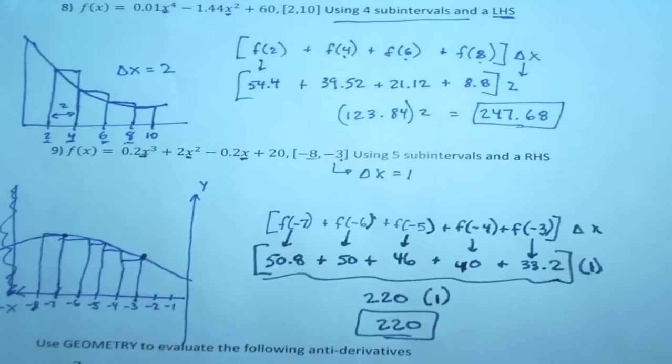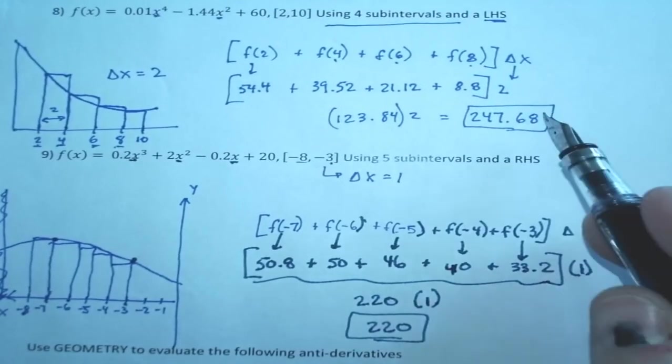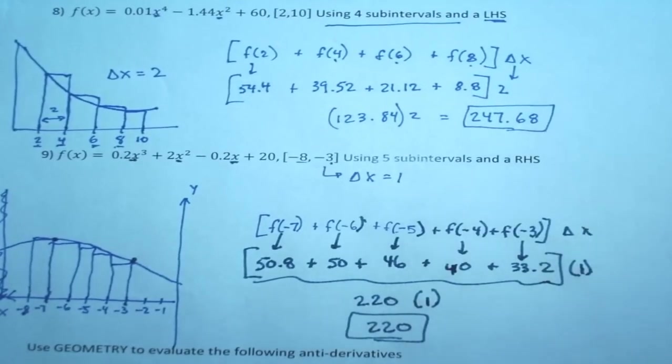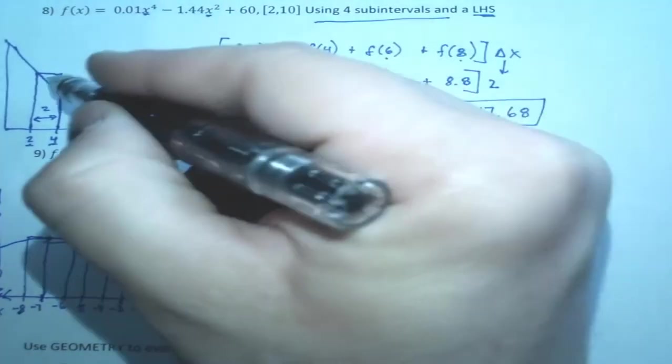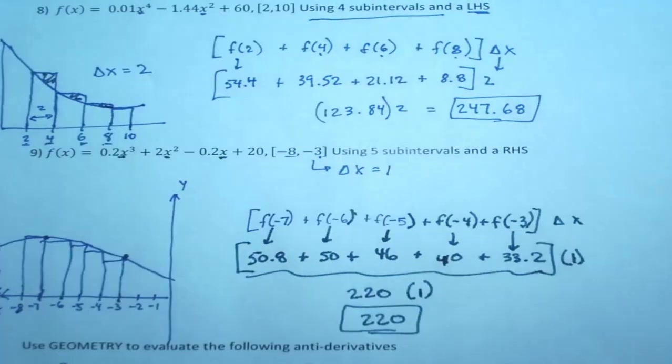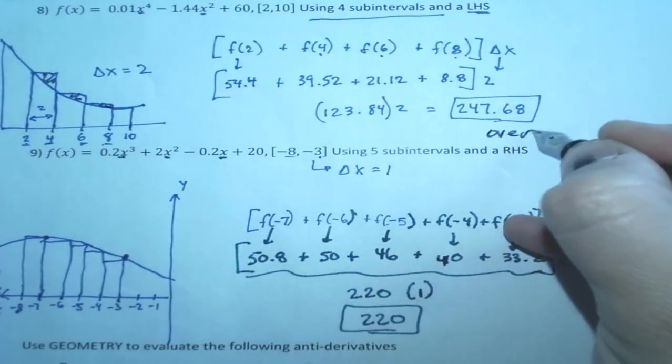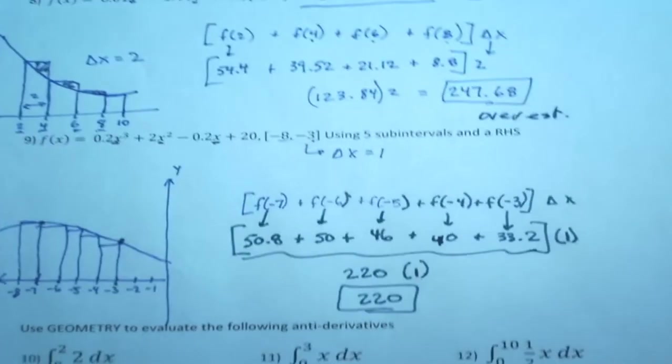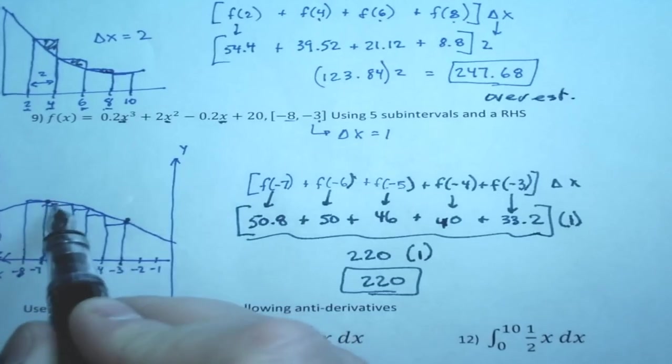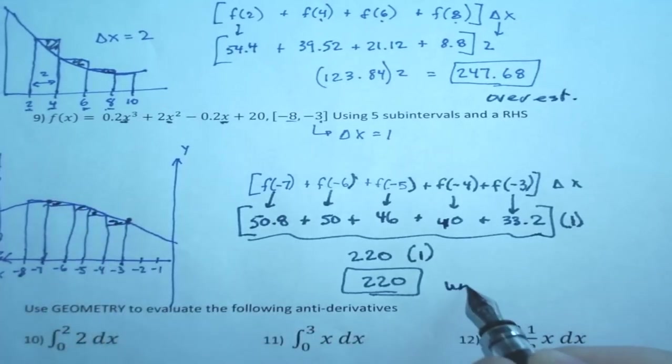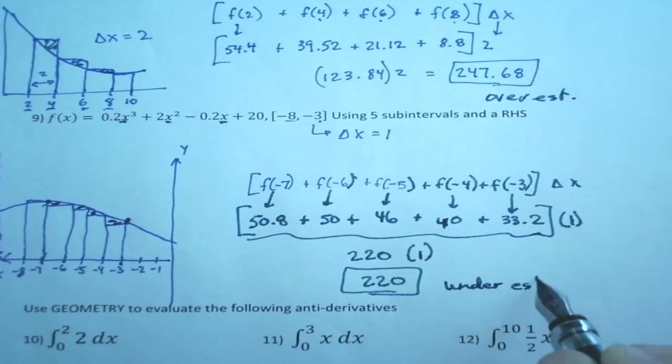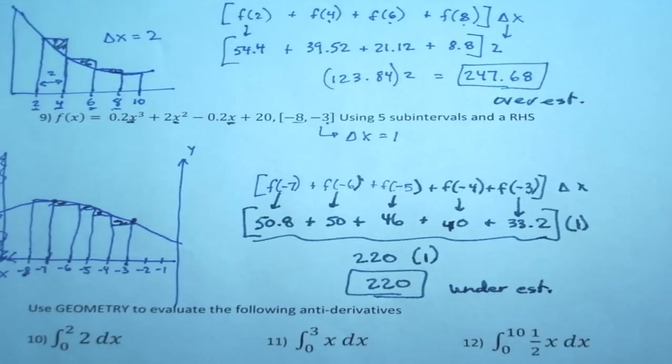Now I want to go back to these two. This one we know is what kind of estimate? It's an overestimate because we've got pieces of the bar sticking above the graph. So this is an overestimate. And this guy here, we've got pieces of the bar under the graph. This is an underestimate.